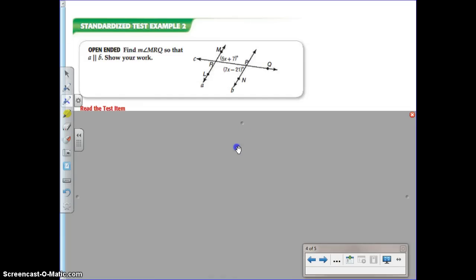Last example, this is one that you might see on a standardized test. If we're given this picture, they ask us to find M R Q, so that's this angle right here, so that A and B are parallel.